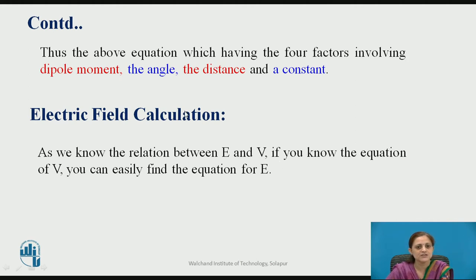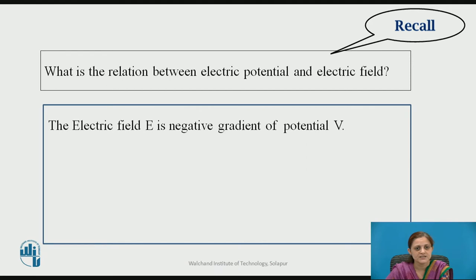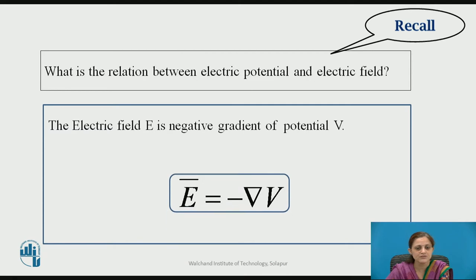If you know the equation for the electric potential, you can easily find the equation for the electric field. Pause the video here and write down the relation between electric potential and electric field. The electric field E is the negative gradient of the potential — in mathematical form, E-bar equals minus gradient of V.